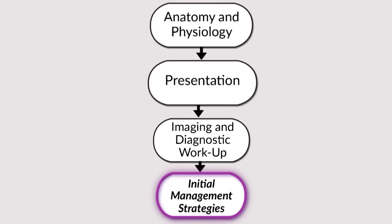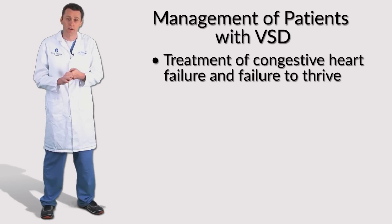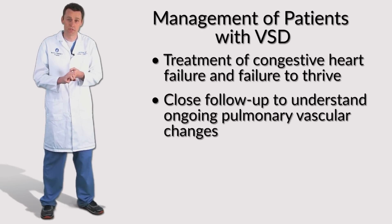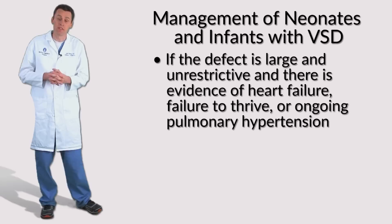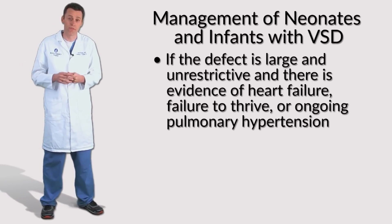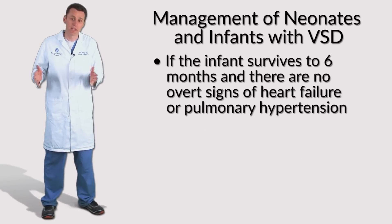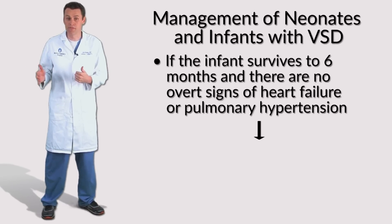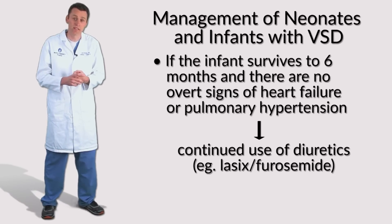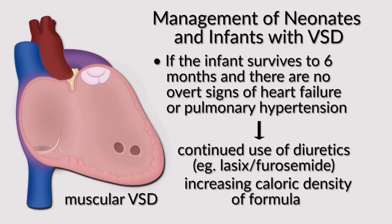Initial Management Strategies. Management centers on treating congestive heart failure and failure to thrive, with close follow-up to monitor pulmonary vascular changes. In neonates and infants, if the defect is large or unrestrictive and there is evidence of heart failure, failure to thrive, or ongoing pulmonary hypertension, closure is recommended. If the infant reaches six months without overt heart failure or pulmonary hypertension, medical management is very reasonable. Lasix and increasing caloric density of formula are two mainstays, particularly if it is a muscular septal defect known to close spontaneously over time.